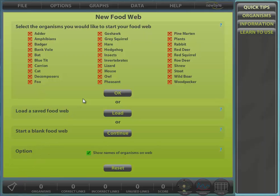In this dialog you may select the organisms you would like to start your FoodChain or web, load a previously saved web, or start a blank FoodWeb. An option to display the names of organisms is also available.